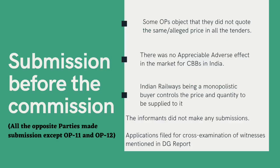All the opposite parties made submissions except for OP11 and OP12. The submissions were as follows: first, some of the OPs objected that they did not quote the same or alleged price in all the tenders; second, there was no appreciable adverse effect in the market for CBBs in India; and third, Indian Railways, being a monopolistic buyer, controls the price and quantity to be supplied to it.